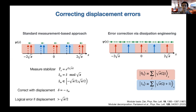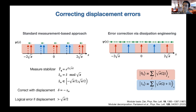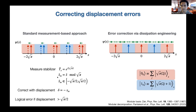A second approach, applied to other bosonic codes such as cat states or binomial codes, is dissipation engineering. Instead of measuring and then correcting, the goal is to engineer a flow in phase space that automatically brings any state back to the code space — illustrated by green arrows directing all states toward the center of each bin. However, for the ideal case, even a device that can exactly measure the stabilizer will project onto infinitely squeezed eigenstates with infinite energy, so measuring exactly adds a lot of energy to the system.